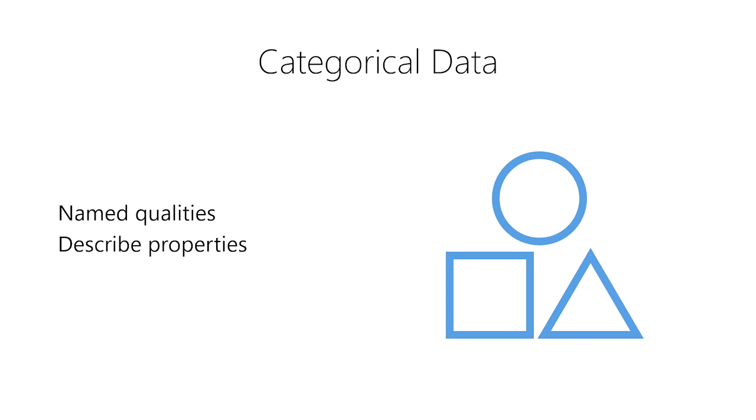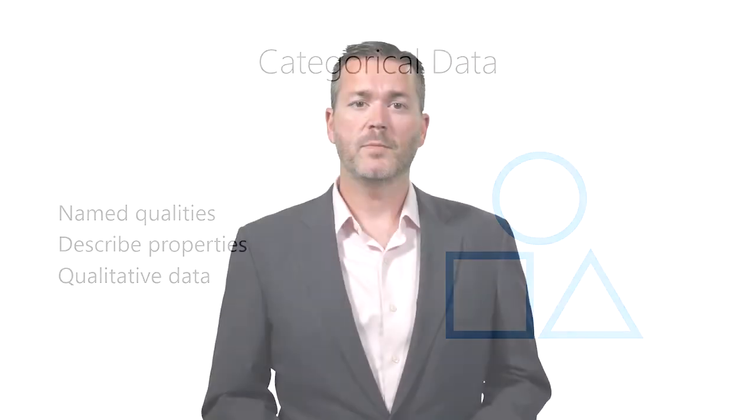In data science, we refer to categorical data as qualitative data since they describe the quality of the thing they represent. However, most beginners more intuitively understand the term categorical rather than qualitative, so we'll continue referring to this type of data as categorical data.